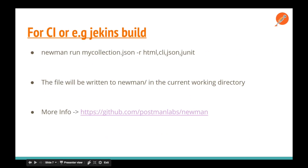For CI or Jenkins builds, the command is: newman run [collection.json or URL] -r html,cli,json,junit. This generates reports in HTML, CLI, JSON, and JUnit formats, which Jenkins uses for reporting. If you only want an HTML or CLI file, you can specify just those. I prefer using all of them — JUnit, JSON, and CLI — as they are used by different Jenkins plugins to give a more detailed view of how test cases are performing.